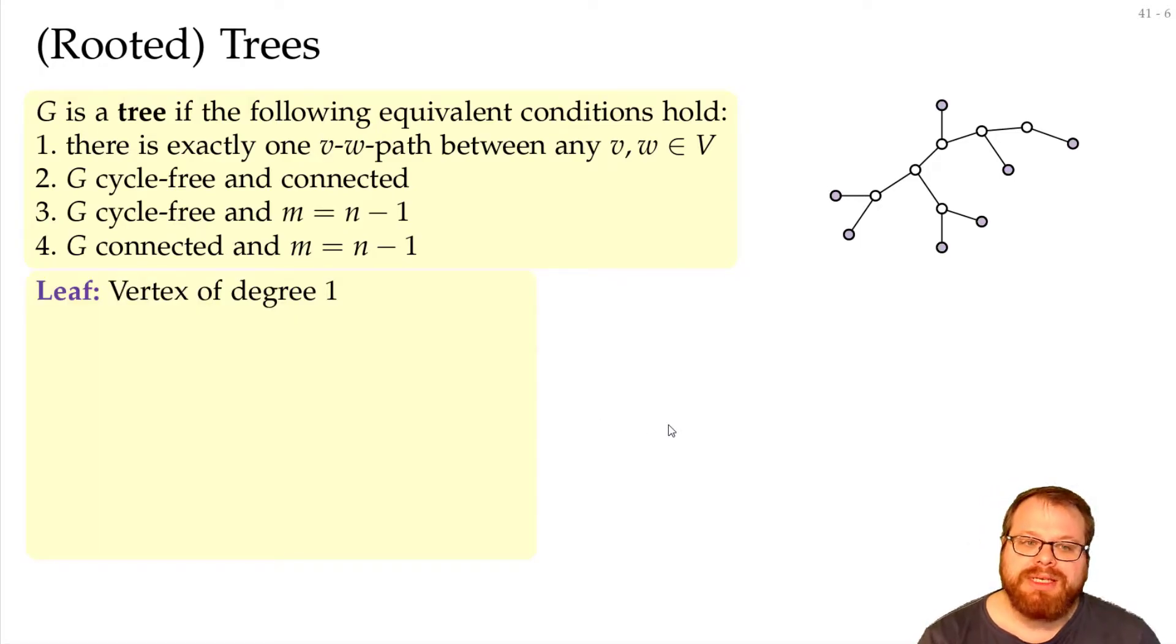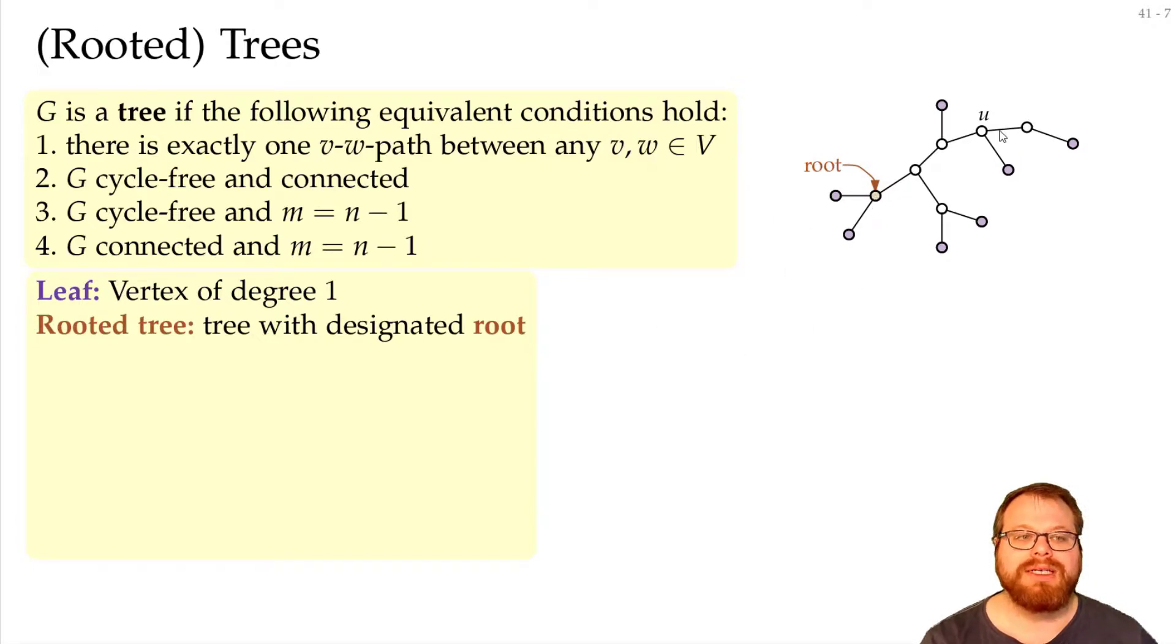Some definitions for trees. We have leaves, those are the vertices of degree 1. If we have a rooted tree, then we also have a designated root.